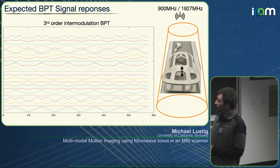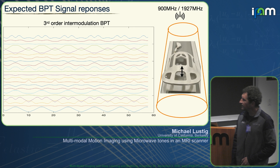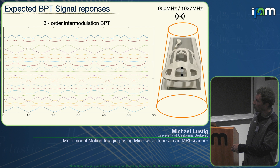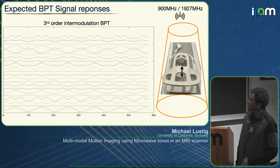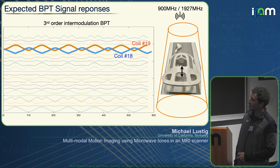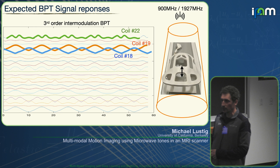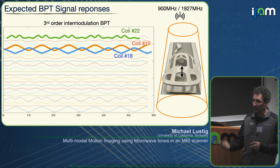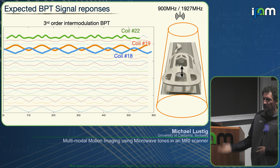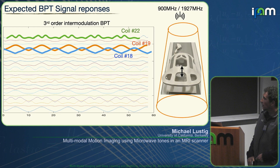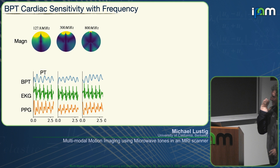We did this experiment with frequencies at 900 megahertz and 1927 megahertz — a third-order intermodulation — with 22 channels being received. We moved a head array inside the bore up and down repeatedly and observed the responses. We saw the expected positive response on some coils, inverted responses on others, and camelback responses on still others, confirming these nulls and troughs are actually appearing — not just in simulation but experimentally. Each coil has a slightly different response depending on its position, which is extremely useful from an information point of view.